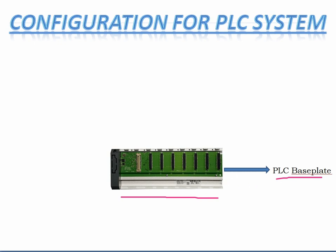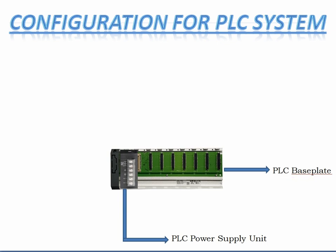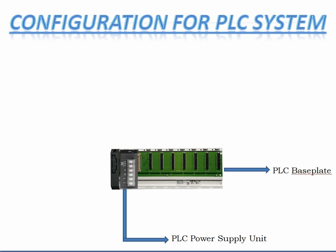Let us add components one by one to the base plate. Now, see the power supply unit — we have added the power supply unit in the first rack of the base plate. When we give power supply to this unit, it will energize and give power supply to all the seven remaining racks. This power supply will extend to other components installed in the base rack, for example: CPU, digital inputs, digital outputs, communication card, and everything.